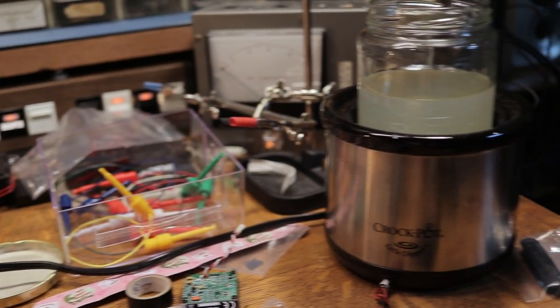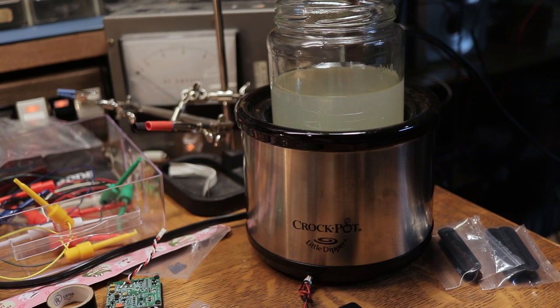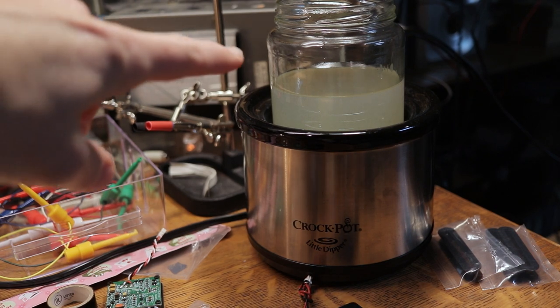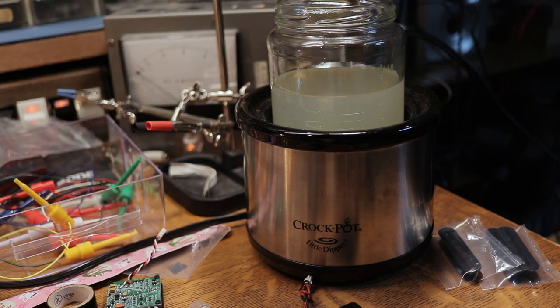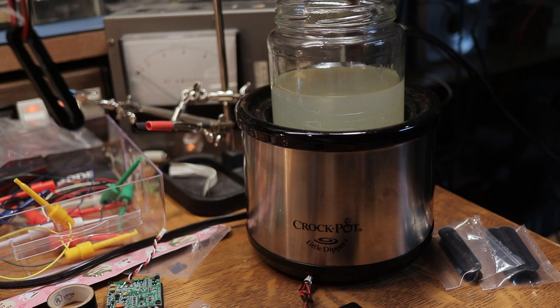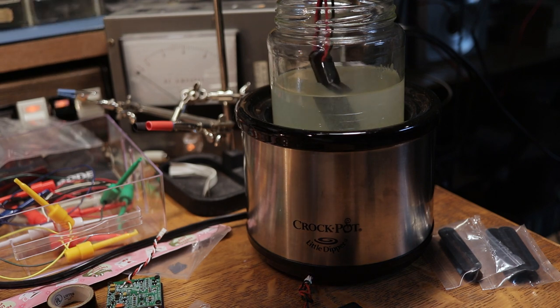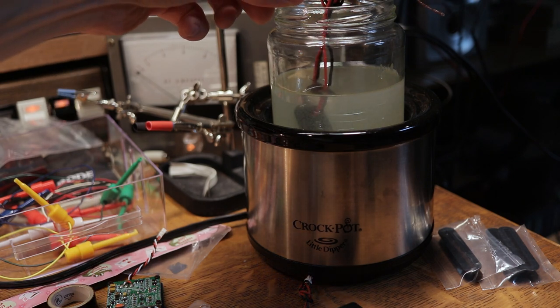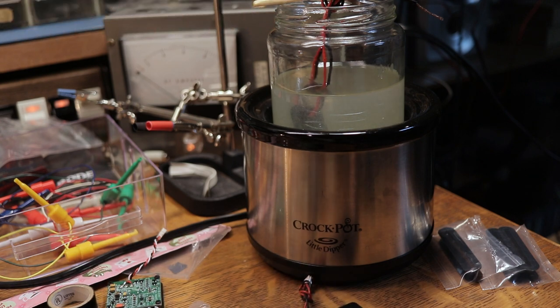The pickup's all taped. Here's my crock pot little dipper, and this has a pickle jar with some candle wax in it. I've got the pickup mounted on a wire and a chopstick. We're just going to dip this right into the melted wax and leave that for a while until all of the bubbles come out of it.